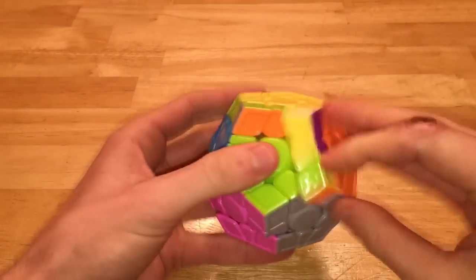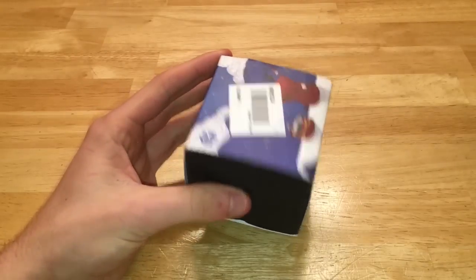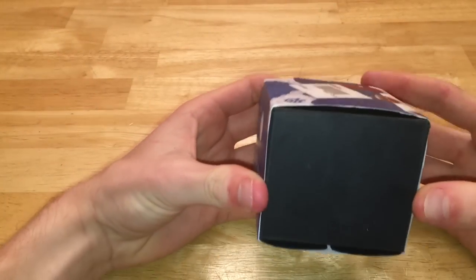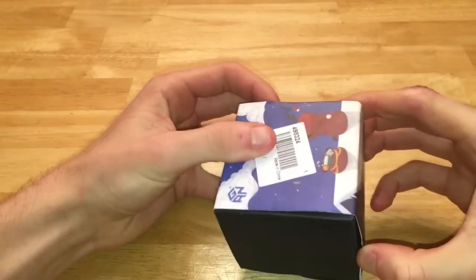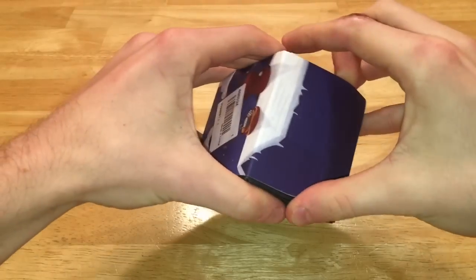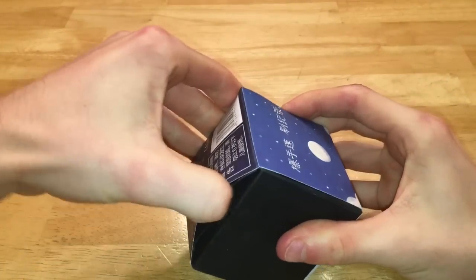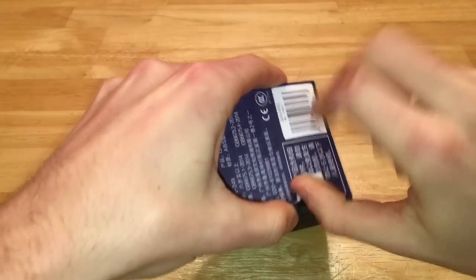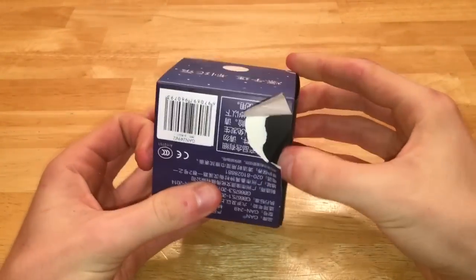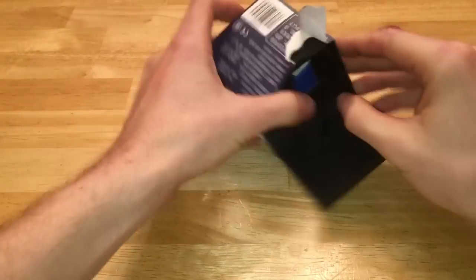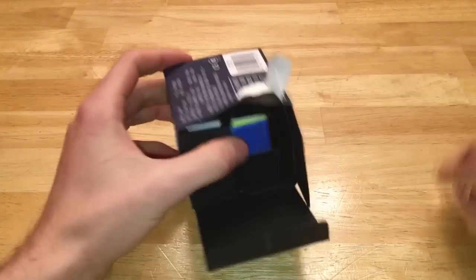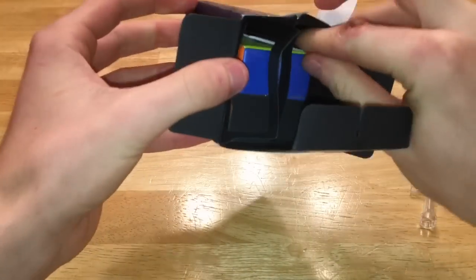The next puzzle we have here is the Gans 249 version 2. So it looks a little bit different. I don't know if there are any other changes to it and I didn't have the first one, so I guess this is going to be my first experience with a Gans 2x2. It comes in this little Christmas box that I don't really need. Alright, so I guess here's the tensioning tool and let's get right into this.